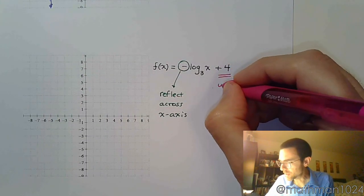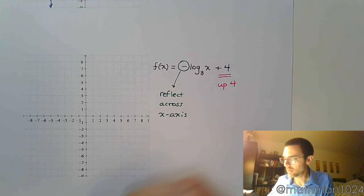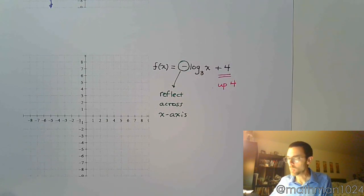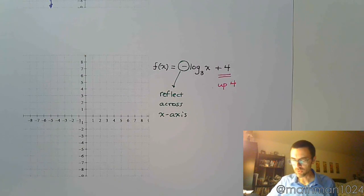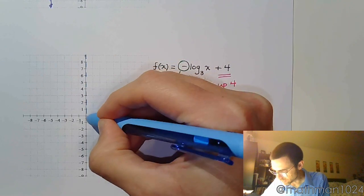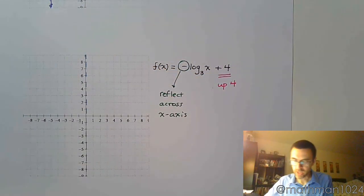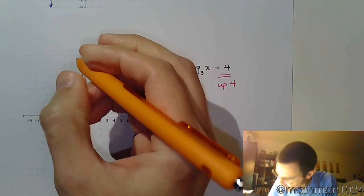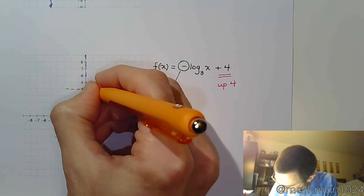I don't have anything inside my logarithm, so I'm not shifting left or right. But I do have the plus 4, so that means I'm going to go up 4 units. So I didn't shift left or right, so I still have my vertical asymptote right here. I went up 4 units.